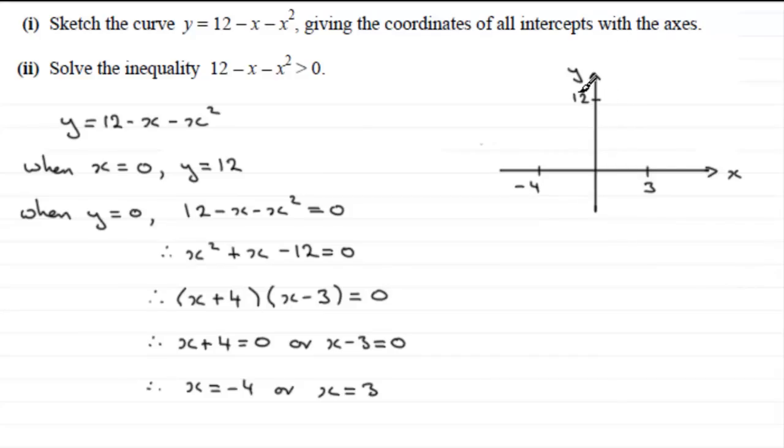So it's going to come up through the minus 4, rise up, and then just slightly higher than the 12 there, and then drop away through the 3, something like that. And that's our parabola.